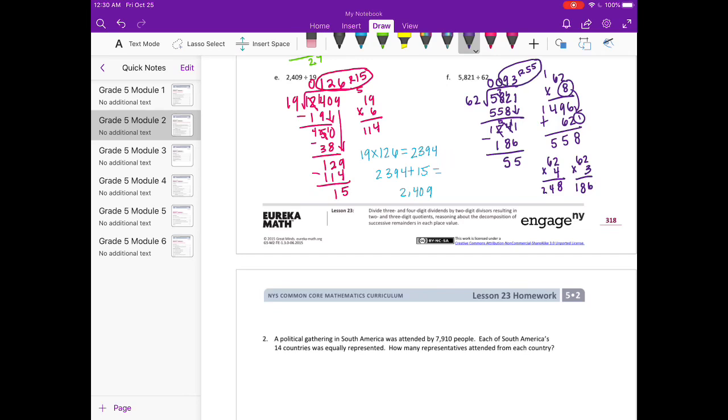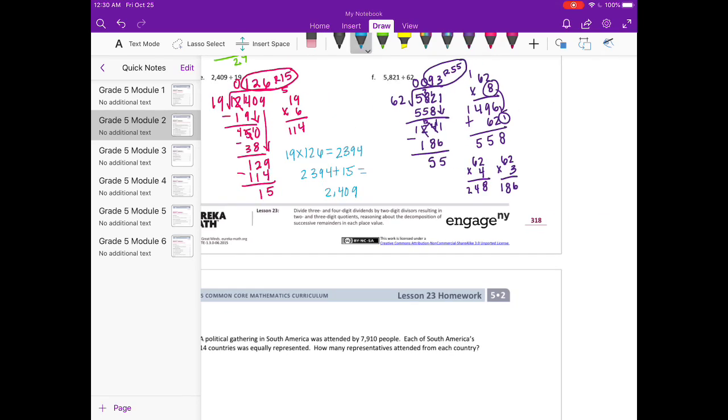And then our check is 62 times 93. That is 5766. And 5766 plus 55 is 5821. So that works.